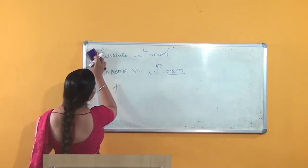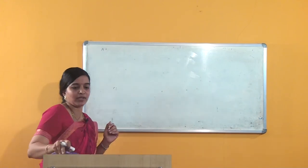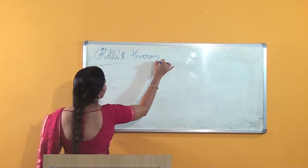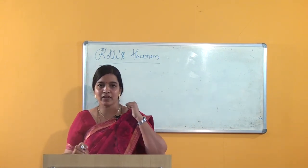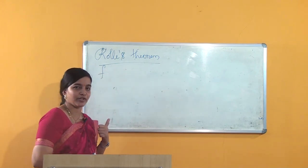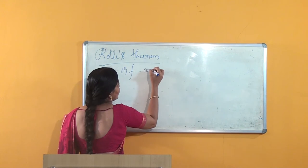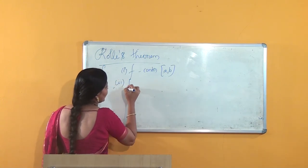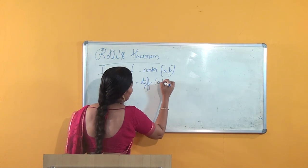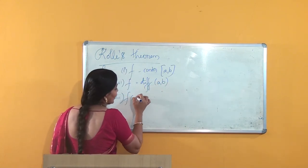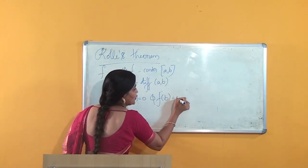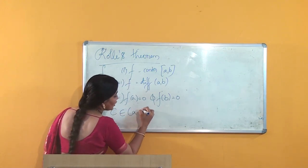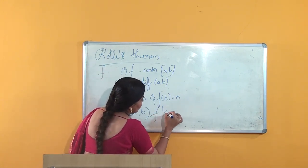Now we will move on to the next theorem based on this concept — Rolle's Theorem. What does Rolle's Theorem say? Rolle's Theorem considers a function F with three conditions: first, F is continuous on the closed interval [a, b]; second, F is differentiable on the open interval (a, b); and third, F(a) = 0 and F(b) = 0. If these three conditions are satisfied, then we can find a C belonging to the open interval (a, b) such that F'(C) = 0.